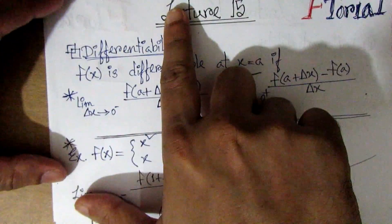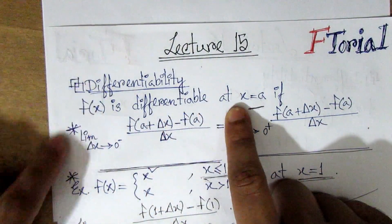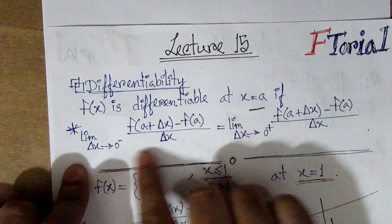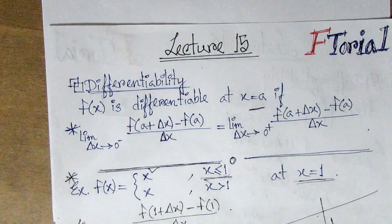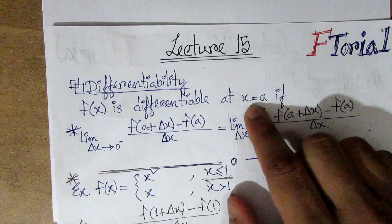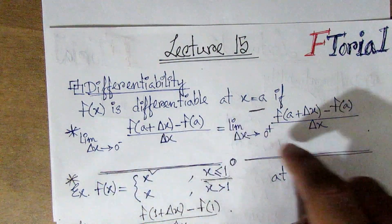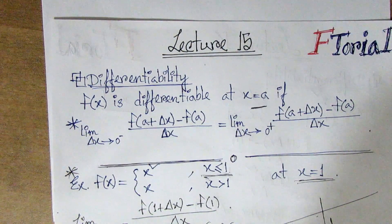So the differentiability formula: we have a formula — f(x) is differentiable at x equal to a if the negative limit equals the positive limit, so it is equal to a. A function is differentiable at point a if the negative limit equals the positive limit — if they are equal, the function is differentiable.